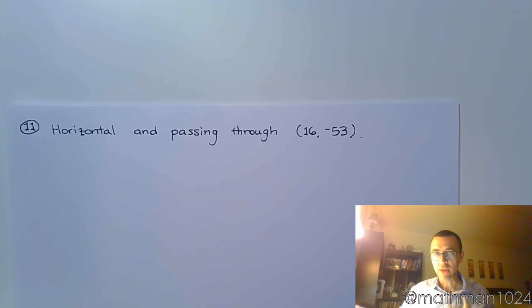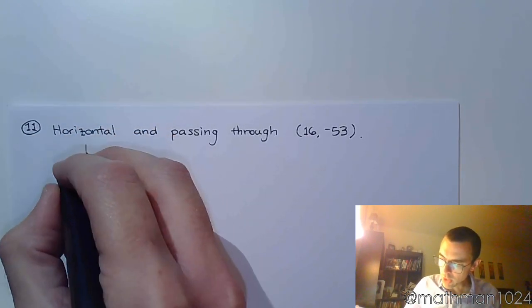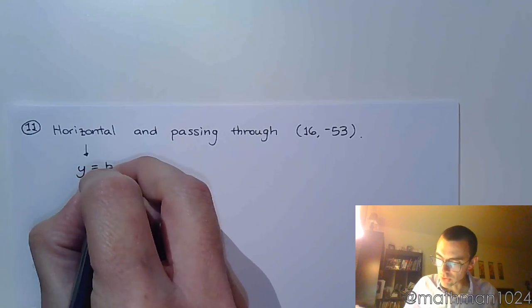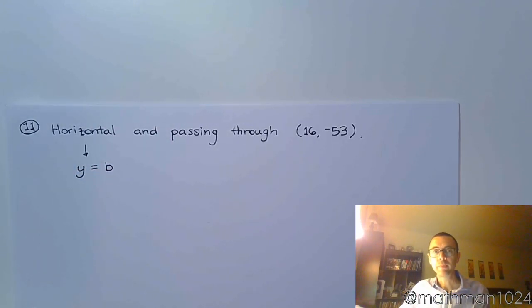Think back to our review about graphing linear equations. If you're going to be horizontal, that means you're going to take on the form of y is equal to some number. It's a horizontal line. That means it has a slope of 0 and it's going to take on the form of an equation y equals b.